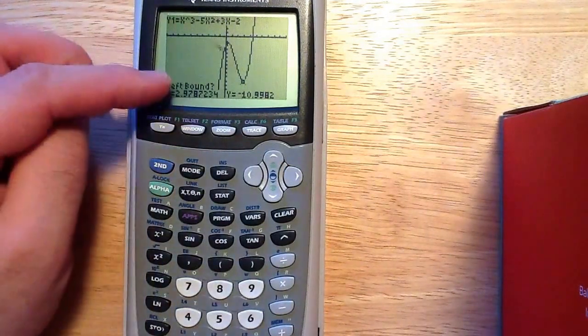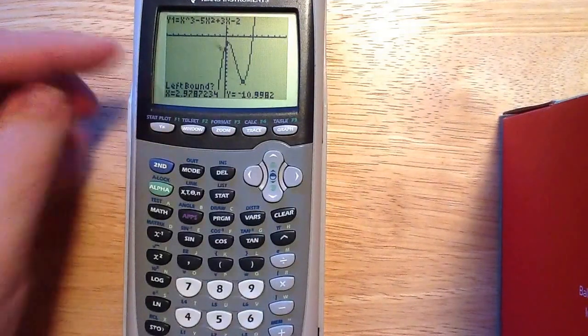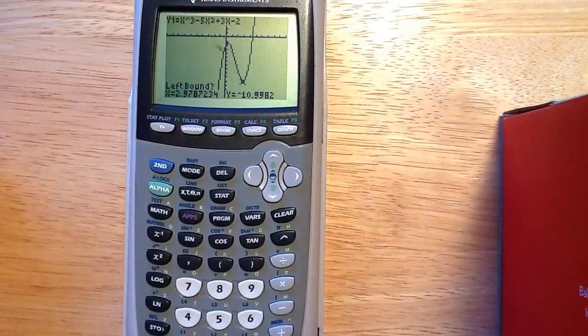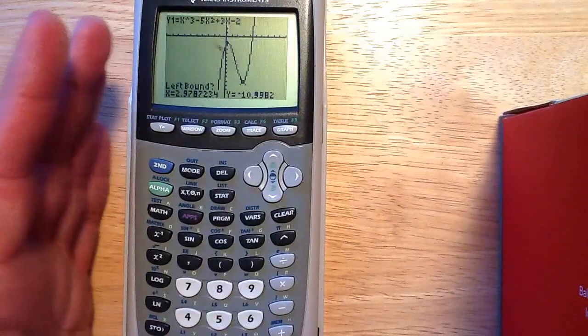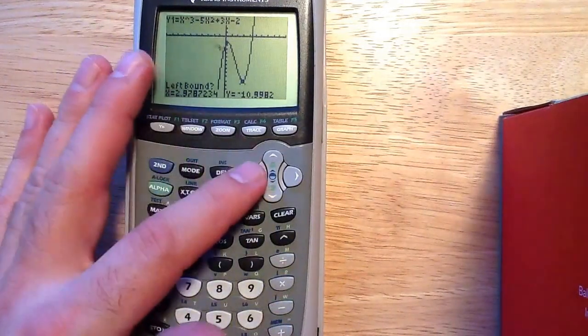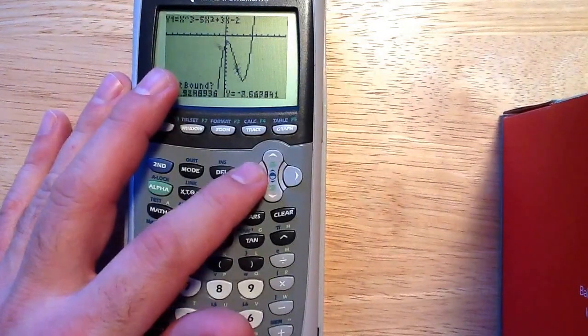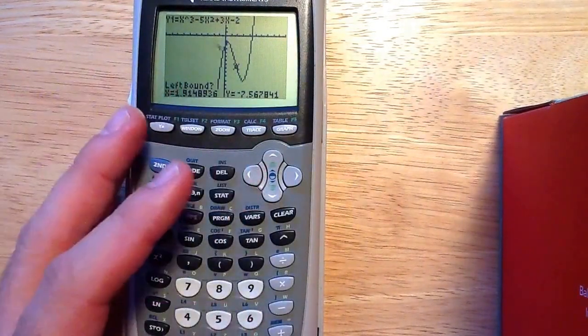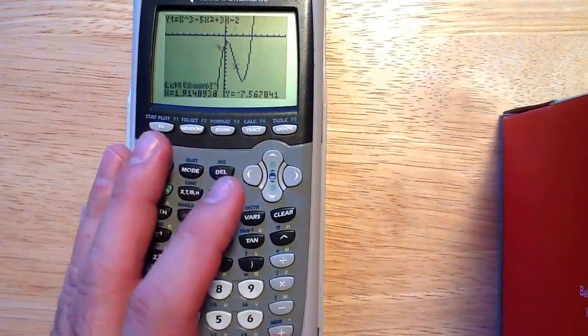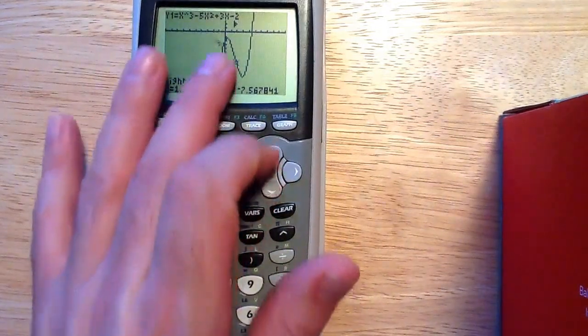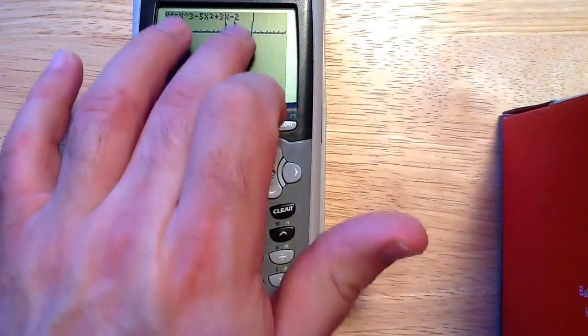So what the calculator is asking us for is a point that is to the left of that minimum point. So I'm going to take that cursor and move it to the left. You can see that little cursor sliding along the graph. Is that to the left of the point where I think it's the minimum? Yes. So I'm going to press enter. A little arrow shows up above it denoting my left bound.